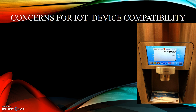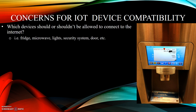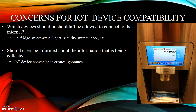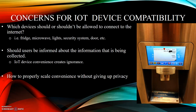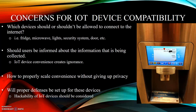Concerns for IoT Device Compatibility. Which devices should or shouldn't be allowed to connect to the Internet? Most people would think of the fridge, the microwave, lights, security systems, solar, etc. Should users be informed about the information that is being collected? IoT device convenience creates ignorance — users don't know what data is or is not being sent. How to properly scale convenience without giving up privacy? A company must be able to decide how to make the item convenient while not giving up the user's privacy. How will proper defenses be set up for these devices, and will the hackability of these IoT devices be considered?